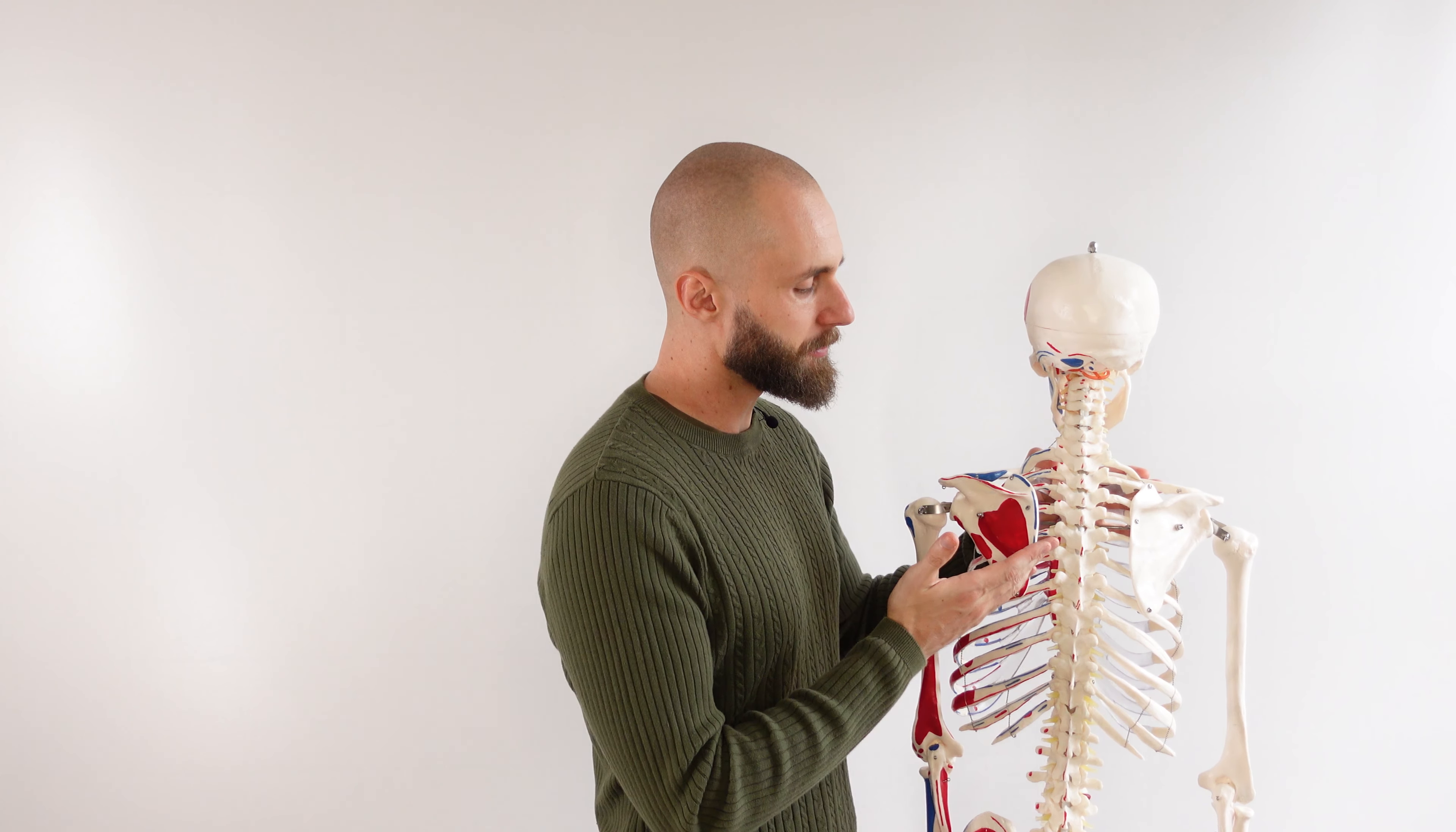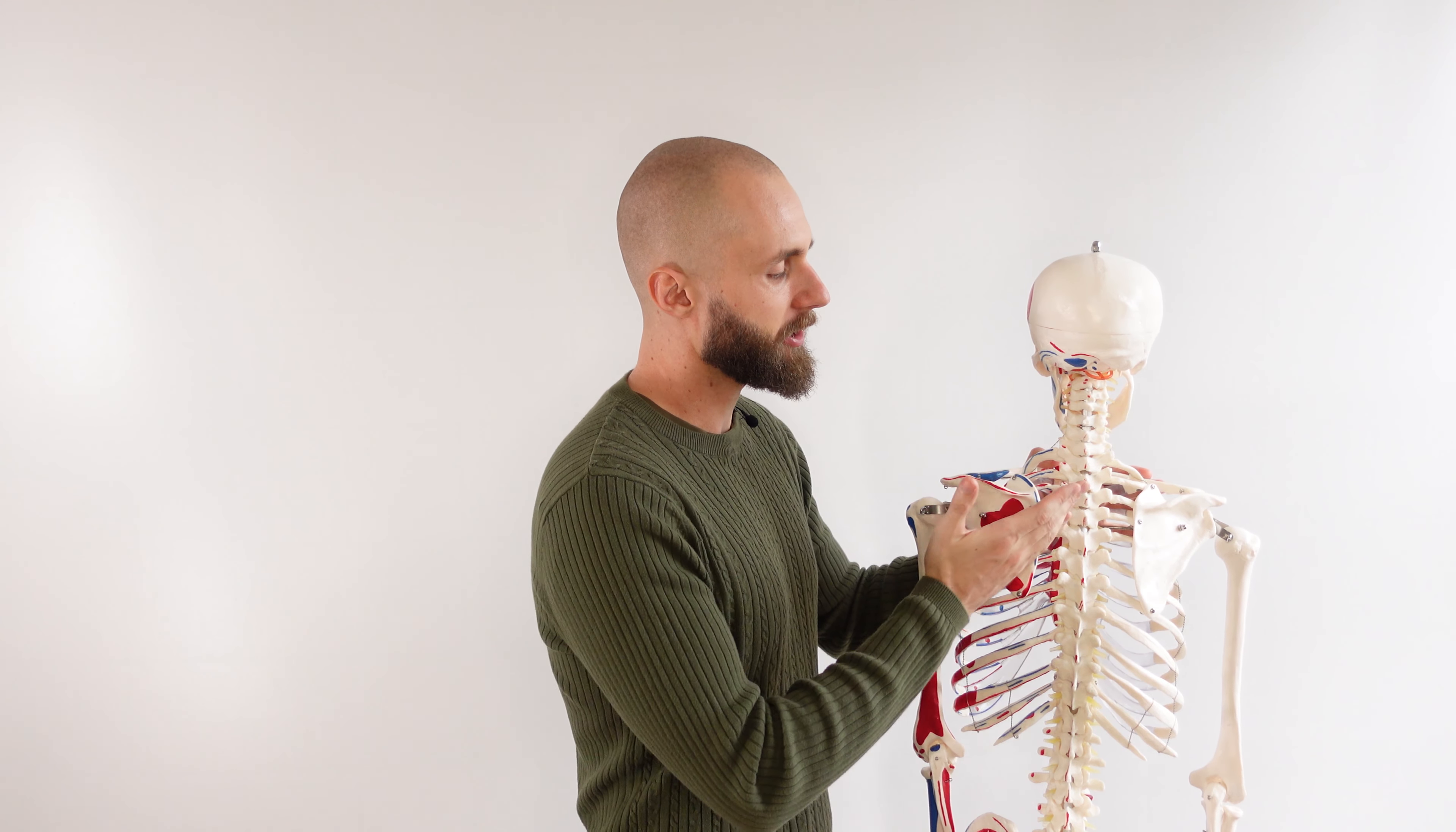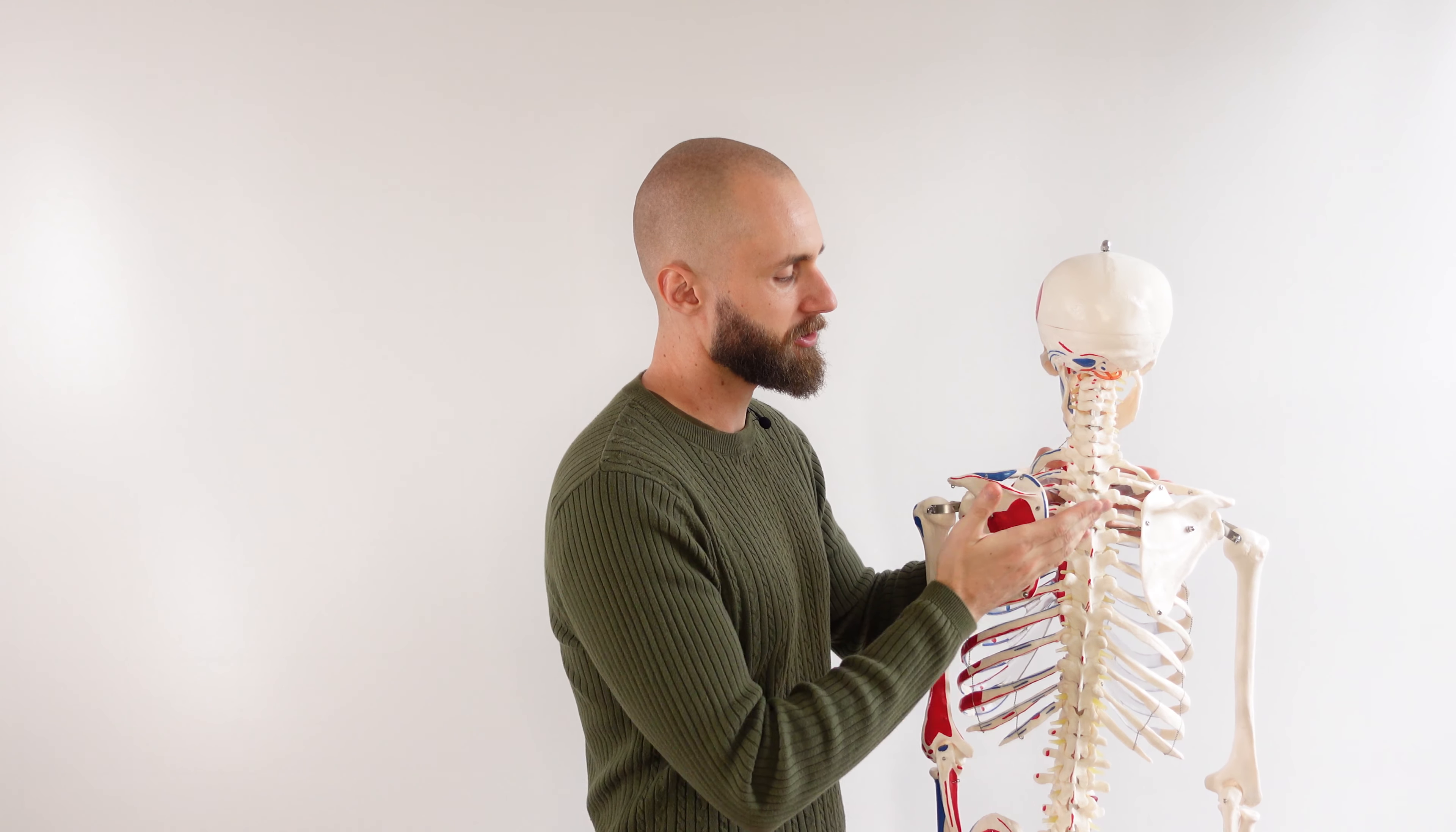This is going to mean the fibers of the rhomboid major are going to be running in a diagonal direction just like this and that's going to give it two primary actions really.